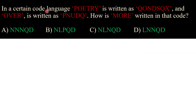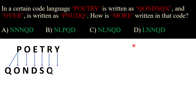In a certain code language, 'poetry' is written as 'QONDSGX' and 'over' is written as 'PNUDQ'. How is 'more' written in that code? I have written the word 'poetry' and its code. The approach: the first letter of the code is P plus one, and the second letter is P minus one — so P plus one gives Q, and P minus one gives O. Then O minus one gives N, and so on for the rest of the alphabets.